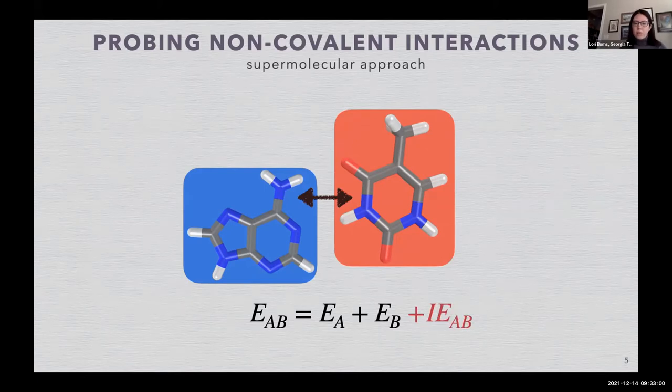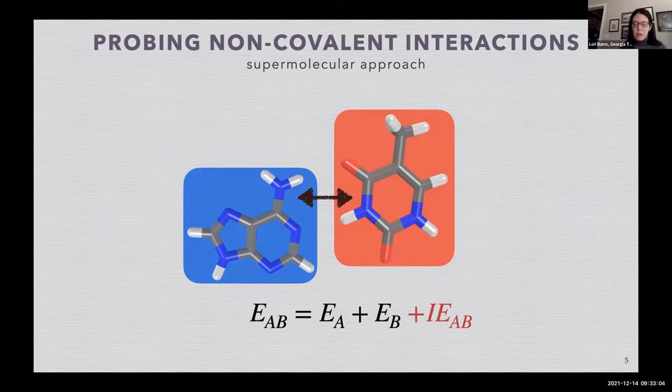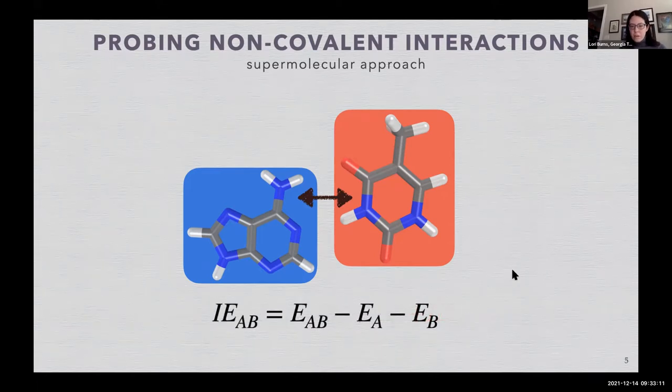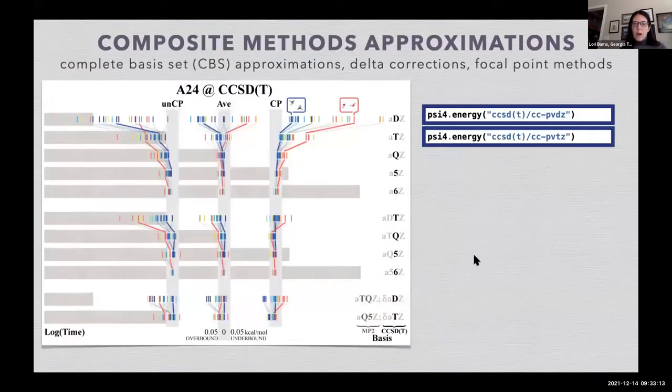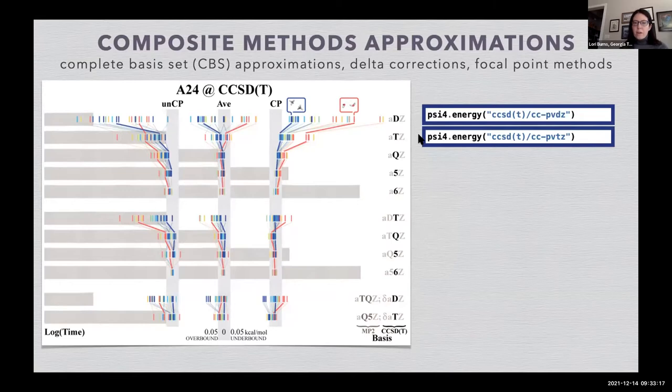This is a supermolecular approach and can be run through any quantum chemistry method, but it's rather expensive. It needs high accuracy calculations. If you look at the errors of bimolecular complexes at a small basis set, they're widely spread. As you get to larger basis sets, they converge upon an energy but at great computational cost, as you see by the wide horizontal bars.